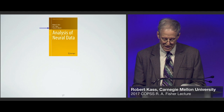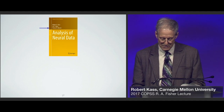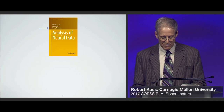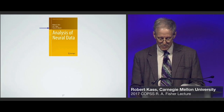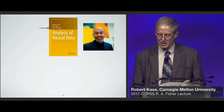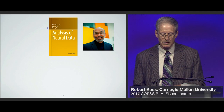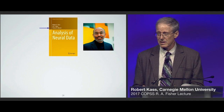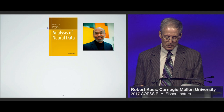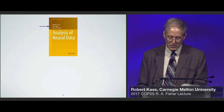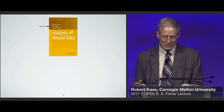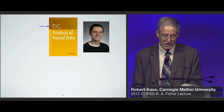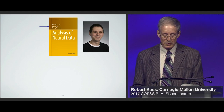Emery Brown is an MD-PhD — a practicing anesthesiologist with a PhD in statistics who is a professor at both Harvard Medical School and MIT, and a renowned neuroscientist from whom I've learned a great deal and collaborated with since I first got into this field 19 years ago. Uri Eden was Emery's first PhD student, and he's now a tenured faculty member in the Department of Mathematics and Statistics at Boston University.